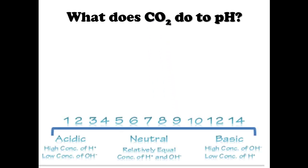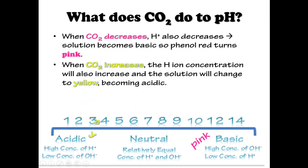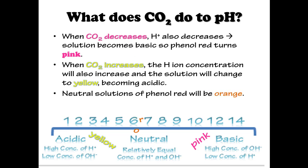When carbon dioxide decreases, the hydrogen ion also decreases. When the hydrogen ion decreases in the solution, the solution becomes more basic, so the phenol red turns pink. When carbon dioxide increases, the hydrogen ion concentration will also increase and the solution will change to yellow, becoming acidic. Neutral solutions of phenol red will appear orange.